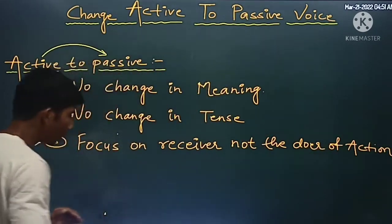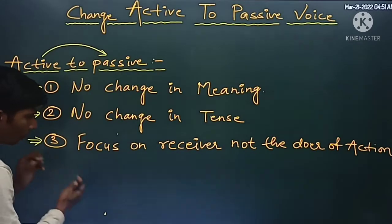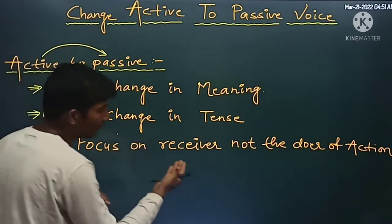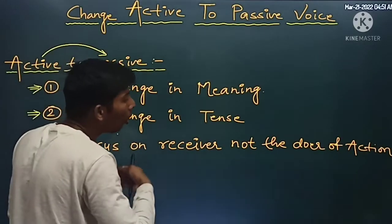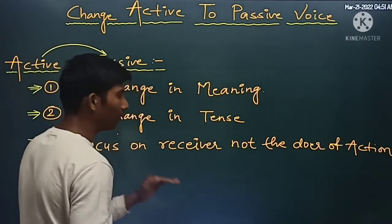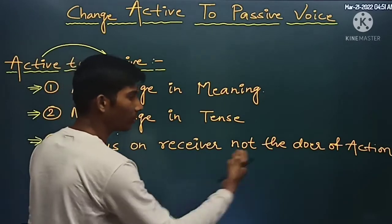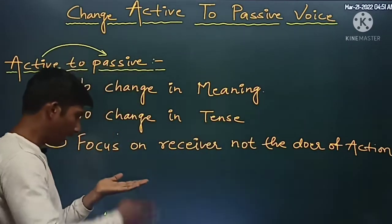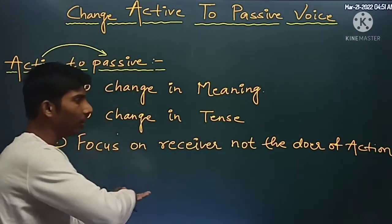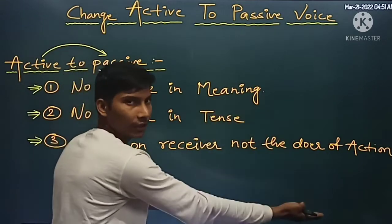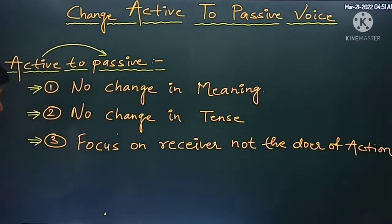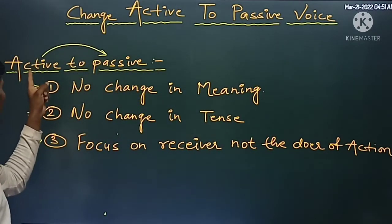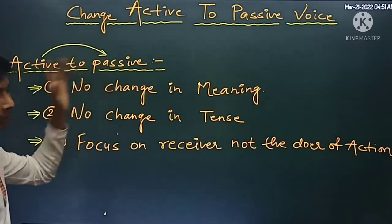The third thing is focus on the receiver, not the doer of the action. The whole focus is transferred to the receiver — to the object of the verb, not the subject. The object becomes subject and the subject becomes object of the sentence whenever we go from active to passive.